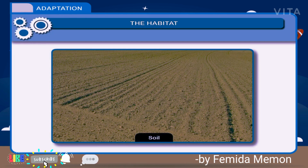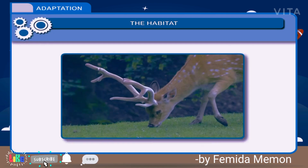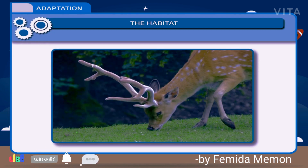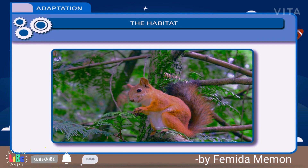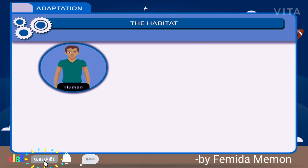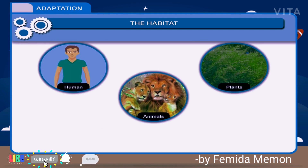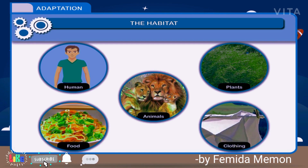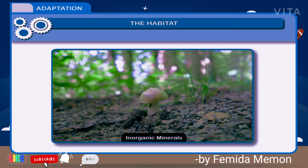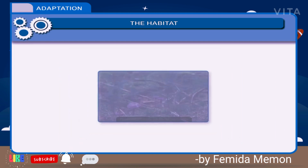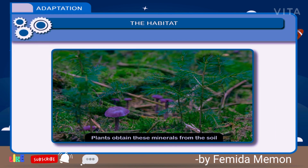You can notice interdependence in many ways. 1. All living organisms depend on non-living components of the environment. 2. Animals depend on plants for food, shelter and protection. 3. Human beings need both plants and animals for food, water, and clothing. 4. Microorganisms depend on dead and decaying matter; they decompose dead things into simple inorganic minerals which return to the soil. 5. Plants obtain these minerals from the soil.